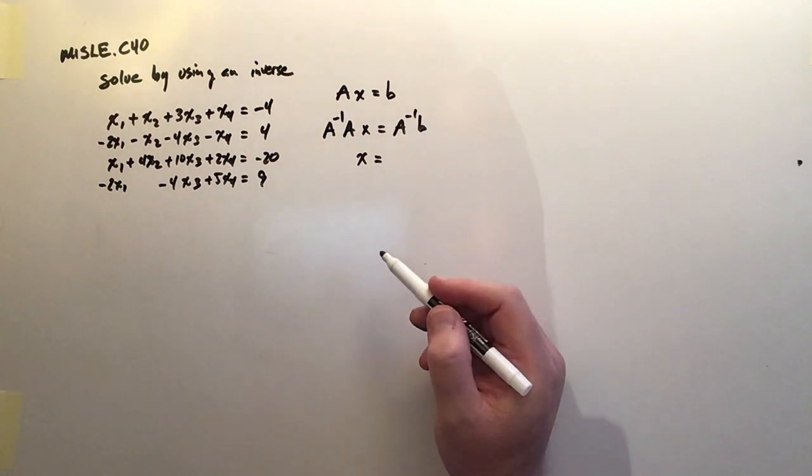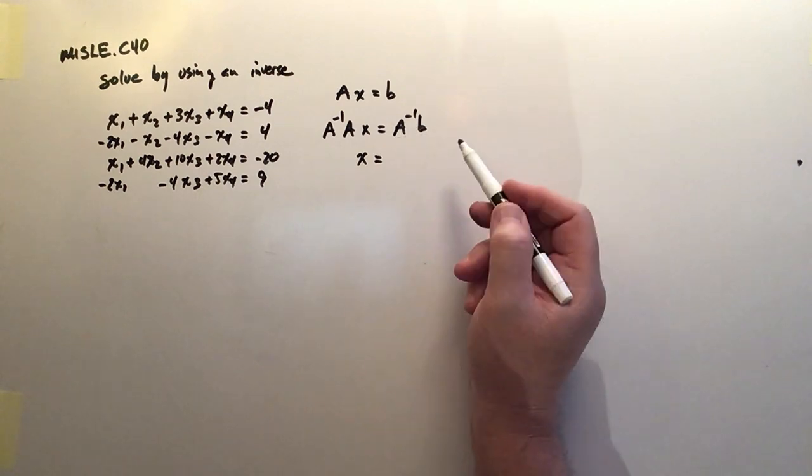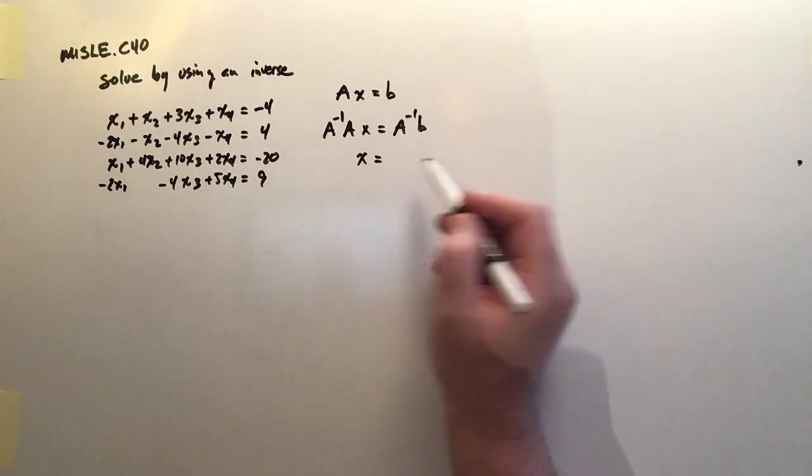And look at this. The right side is just the product of the inverse matrix times the solution vector. And that should be an easy product to work out. And that product will be the solution.